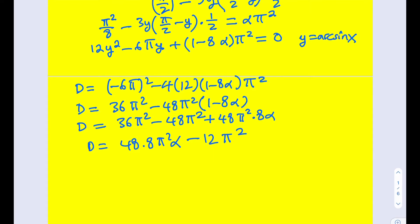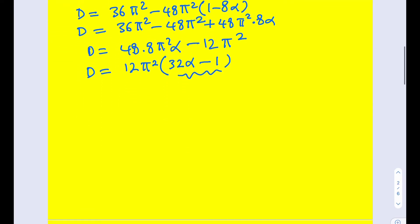We can factor out 12π² as a common factor, giving us 12π²(32α - 1). Since 12π² is always positive, in order for the discriminant to be positive or negative, we just need to check the sign of (32α - 1). So now we have three cases.